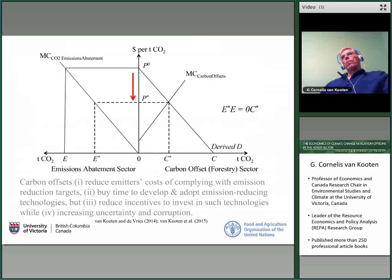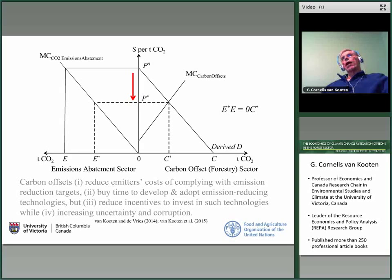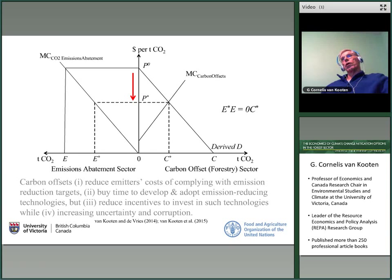Here is a diagram that shows how that works. We have an emission abatement sector on the left-hand panel and we see that without any carbon offsets the emissions would have to be abated up to E. However, with a carbon offset market in forestry, we can derive a demand for carbon offsets, given by the derived demand curve in the right-hand panel. There is a marginal cost of creating carbon offsets and where the intersection occurs at price P star, that becomes the price in both markets. So the price now is below what it would be if we relied totally on the emissions abatement sector. These carbon offsets therefore reduce emitters' costs of complying with emissions reduction targets and they buy needed time to develop and adopt emission reducing technologies.